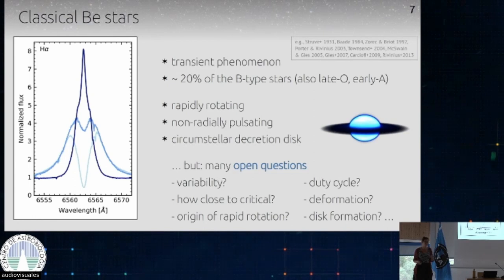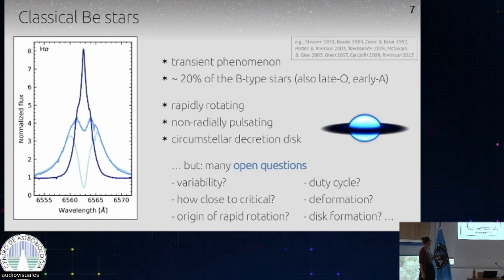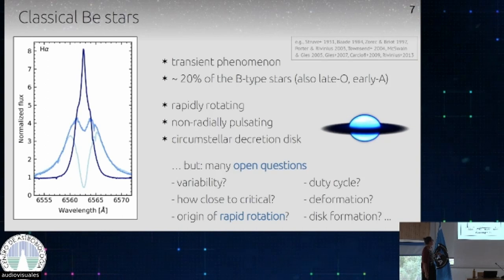If a star rotates that rapidly, it becomes deformed — it's not spherical anymore but more like an oblate shape. And then the question is: why are they rotating so rapidly? Where is this rapid rotation coming from? This is basically what I want to focus on in today's talk. There were mainly two channels, and I've already mentioned binaries. That's one of the ideas proposed to explain this rapid rotation.